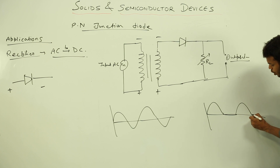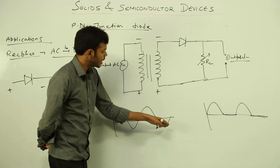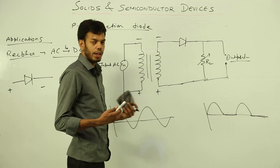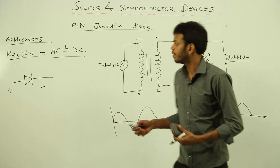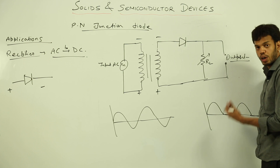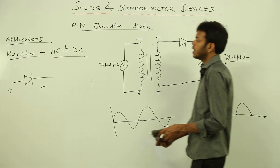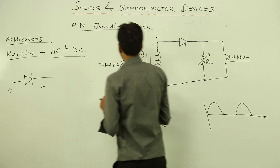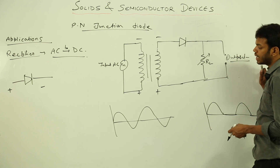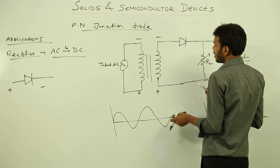During the positive half cycle we get the output; during the negative half cycle we do not. So these negative cycles are getting eliminated from the circuit. This is how a rectifier converts AC to DC — it produces a fluctuating DC, not a constant DC. This circuit diagram was for a half wave rectifier because it converts only half of the cycles to DC, so there must be a full wave rectifier as well.